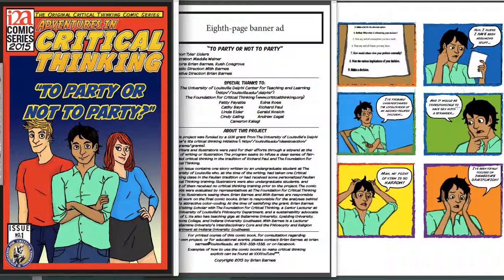You could also reconstruct the thinking. You could ask yourself, do I agree with the reasoning that's going on here? Once you know that these are elements of thought used for analysis and these are intellectual standards used for assessment, you can go back and recreate the thinking — going panel by panel to see if you agree with Paul's analysis based on the information presented throughout the comic.